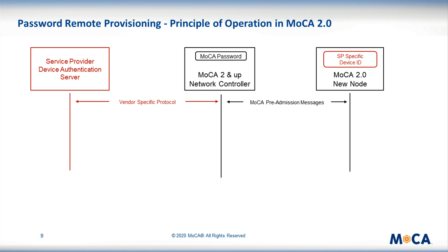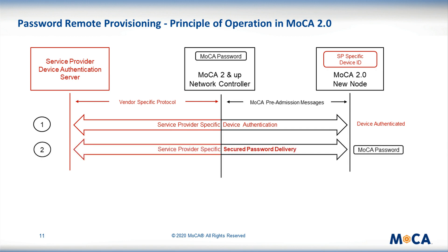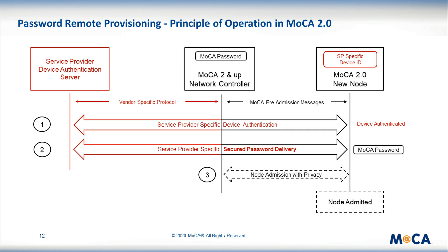Now that the MoCA pre-admission transport service has been detailed, we can describe how the MoCA network password can be provisioned on a MoCA 2.0 device over the coax medium. In the first step, a vendor or service provider specific protocol runs on the NC and the new device over the MoCA pre-admission transport service. This protocol first authenticates the new MoCA device. In the second step, after the device is successfully authenticated, the protocol transmits, in a secure way through an encrypted tunnel, the MoCA network password to the new MoCA device. In the third and last step, once provisioned with the MoCA network password, the new MoCA device may get admitted on the MoCA network that runs in privacy mode.